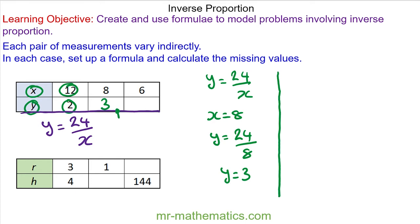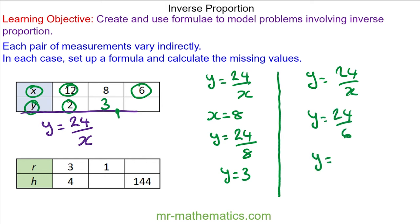We can also use the model to work out the value of y when x is equal to 6. Substituting into our model the new value of x, we can see that when x is equal to 6, y is equal to 4. And we can see that as x gets smaller, y is getting bigger.